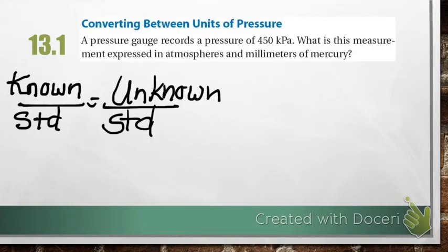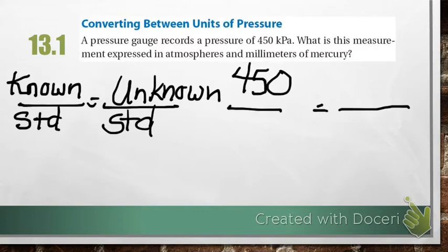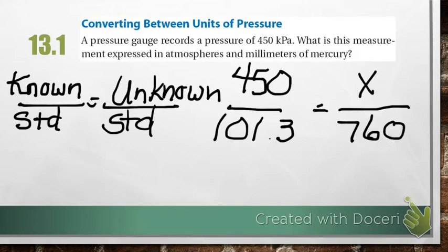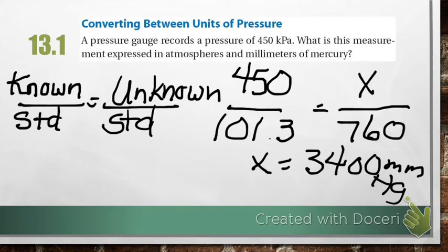So let's do an example problem. We are going to convert 450 kilopascals to millimeters of mercury and atmospheres. Here we go. So, here's our formula. We need to plug in what we know. We know there's 450 kilopascals. Our standard that goes with kilopascals is 101.3. Our X is going to be our unknown. We're going to millimeters of mercury. Our standard for that is 760. If we solve for X, then X equals 3,400 millimeters of mercury, which is the same as 450 kilopascals.